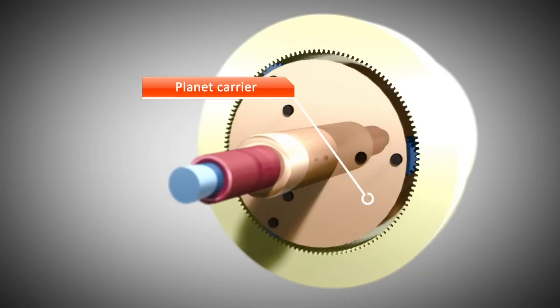With this kind of automatic transmission, five gear ratios can be achieved by locking and connecting components.